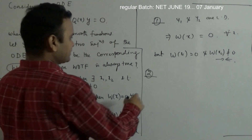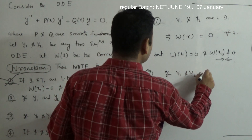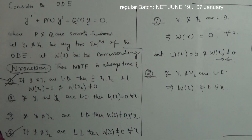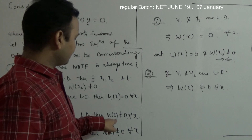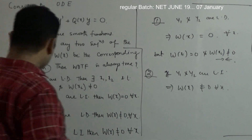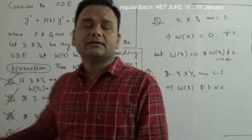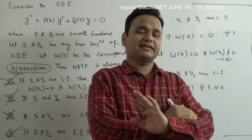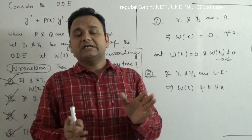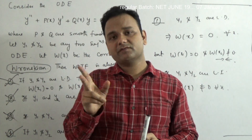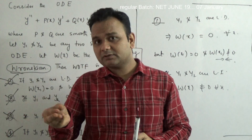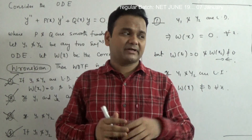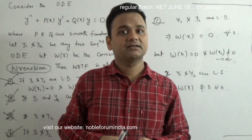Option 2 says that if y1 and y2 are linearly independent, the Wronskian is zero — that is also wrong. If y1 and y2 are linearly independent, by the theorem the Wronskian is never going to be zero. So Option 4 is correct: if y1 and y2 are linearly independent, the Wronskian is not equal to zero for all x. This question is essentially asking you to state the theorem directly — the relationship between the Wronskian and linear independence of solutions of a differential equation.